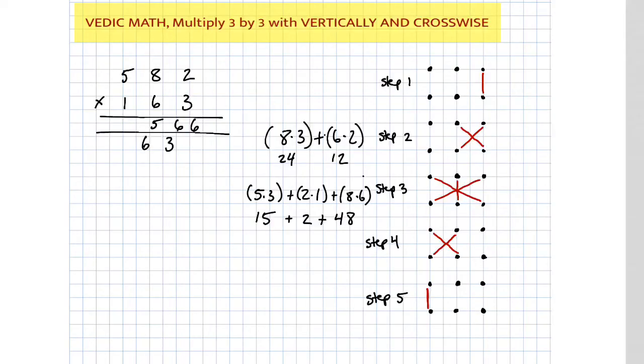Okay, step 4. Another crosswise pattern. That means 5 times 6 plus 1 times 8. You could almost do this in your head. 5 times 6 is 30, 8 times 1 is 8. So we know that's 38. But just for your sake, I'll write it out. 5 times 6 plus 8 times 1. Finally, our last step. Step number 5 is just this vertical one here. 5 times 1. We know that's 5.